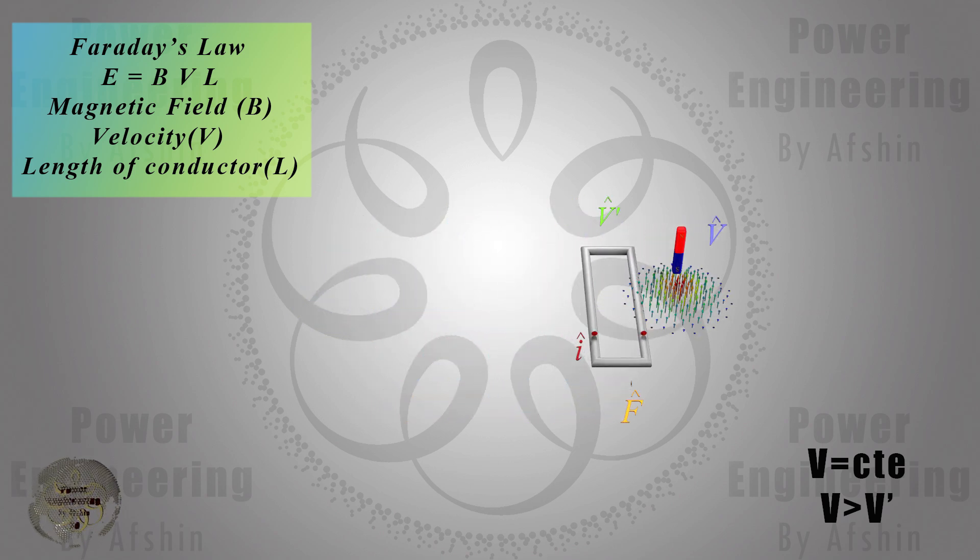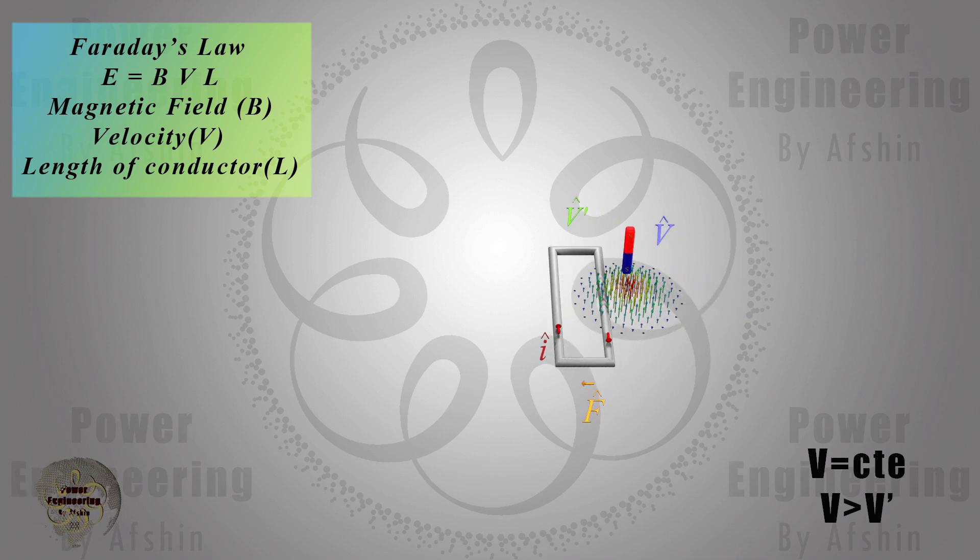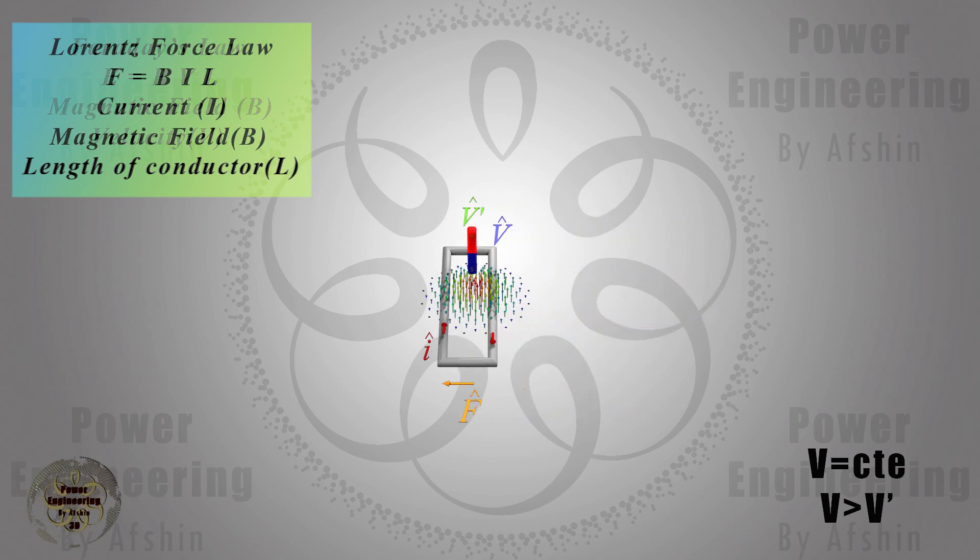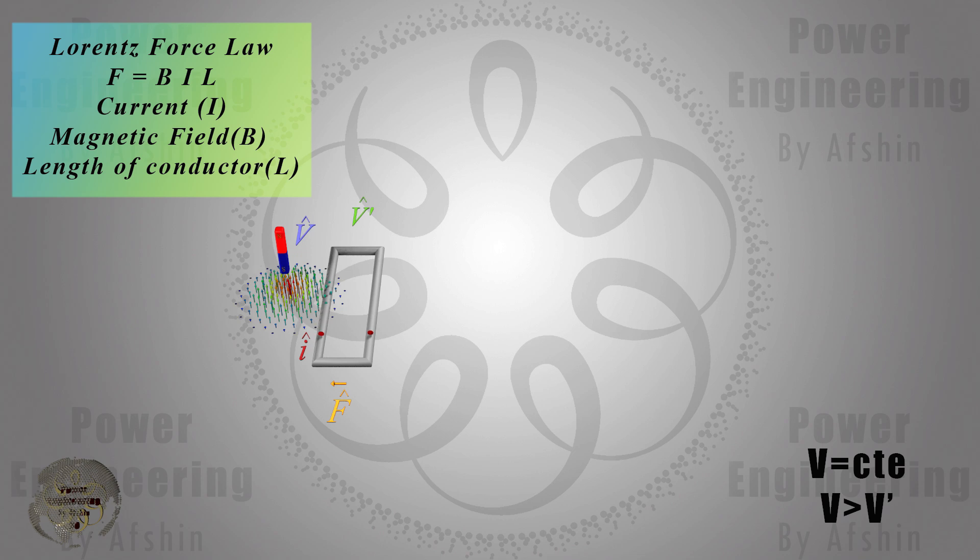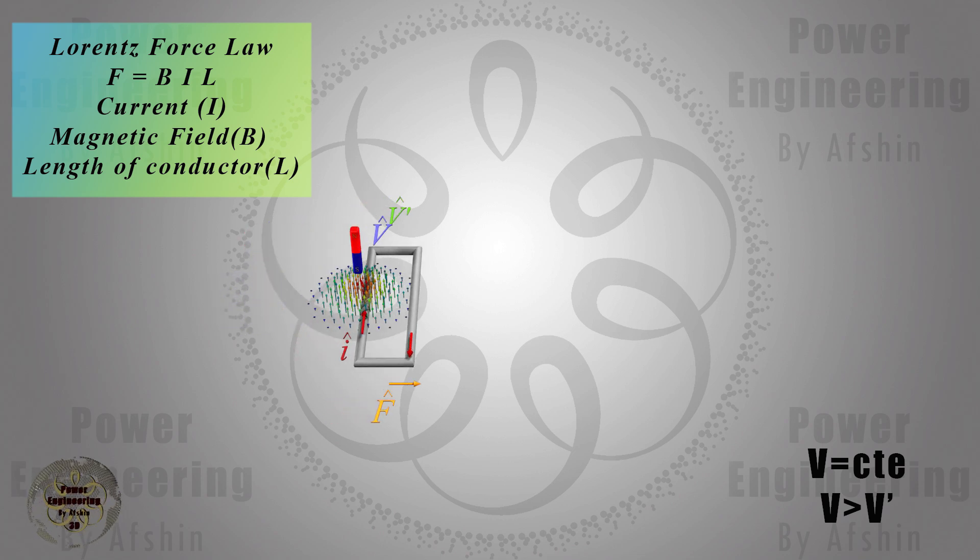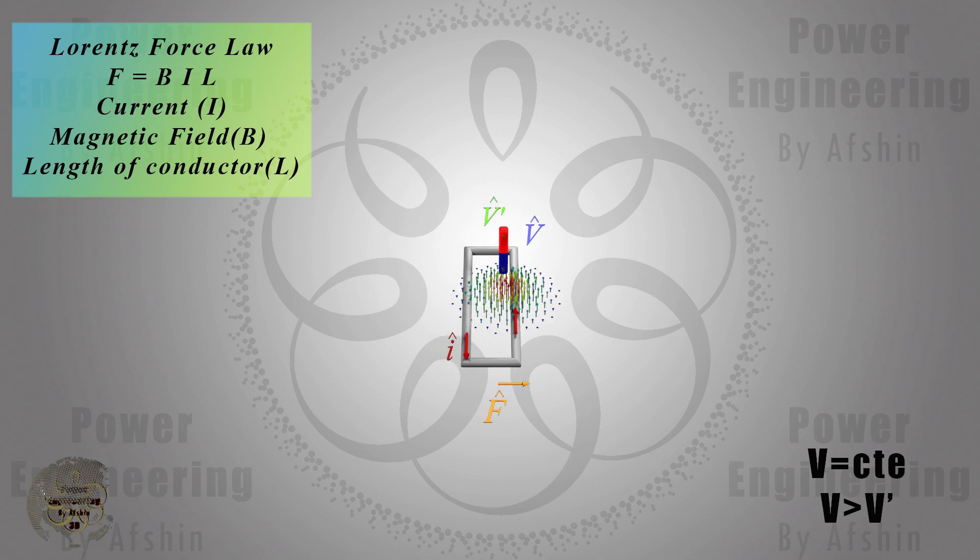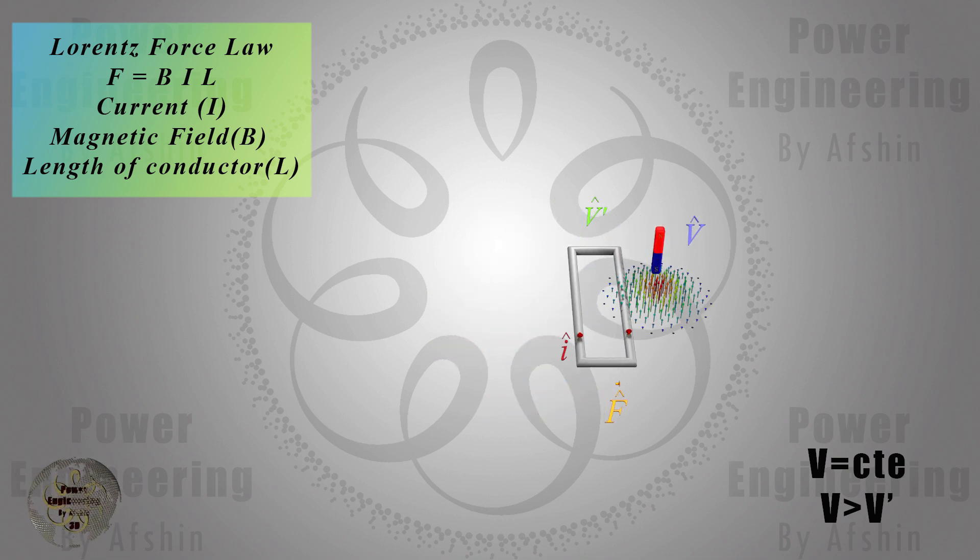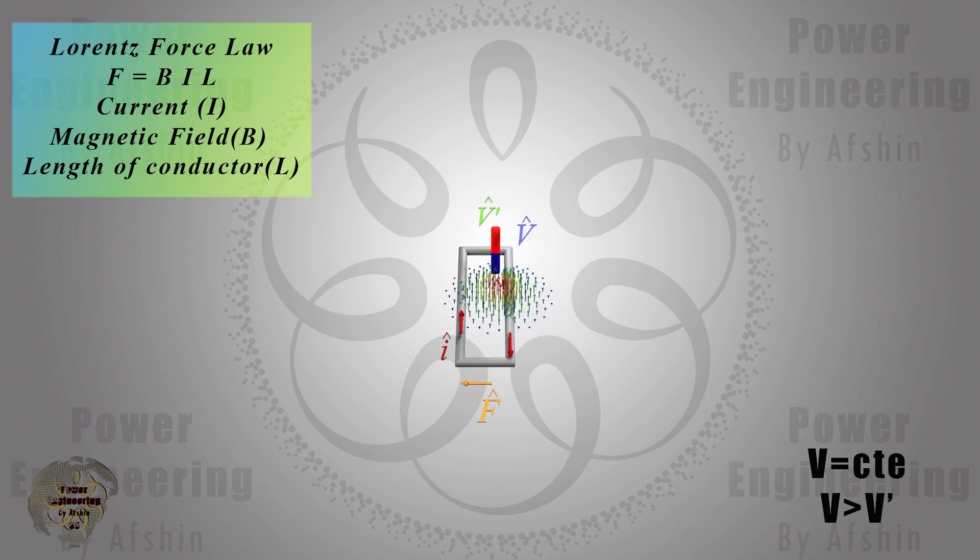Due to the loop's closed configuration, this induced voltage initiates a current flow within the loop. As current flows through the loop, according to the law of magnetic force by Lawrence, each conductor carrying the current experiences a force as described by the formula UC.